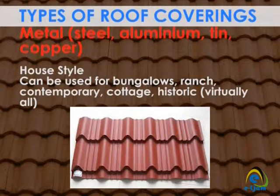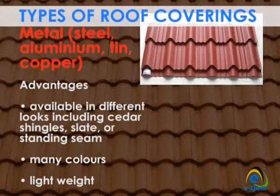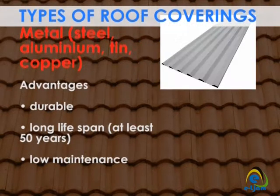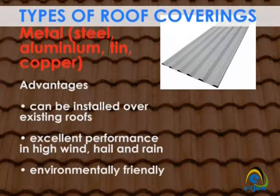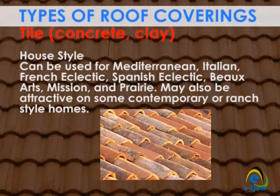Metal roofing — steel, aluminium, tin, copper. House style: can be used for bungalows, ranch, contemporary, cottage, historic — virtually all. Advantages: available in different looks including cedar shingles, slate or standing seam, many colors, lightweight, durable, long lifespan of at least 50 years, low maintenance, can be installed over existing roofs, excellent performance in high wind, hail and rain, environmentally friendly. Disadvantages: may be difficult to install, can be expensive, may need periodic painting.